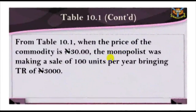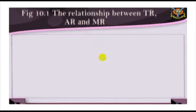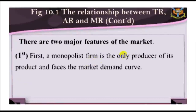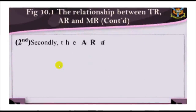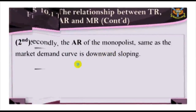In Table 10.1, when the price of the commodity is 30 Naira, the monopolist was making sales of 100 units per year, bringing total revenue to 3,000. However, for the monopolist to boost his sales to 102 units, he has to reduce price. This reduction will not only affect the 102 units but all the previous 100. This will lead to an increase in total revenue; however, the marginal revenue of 4.5 is below the price and the average revenue.